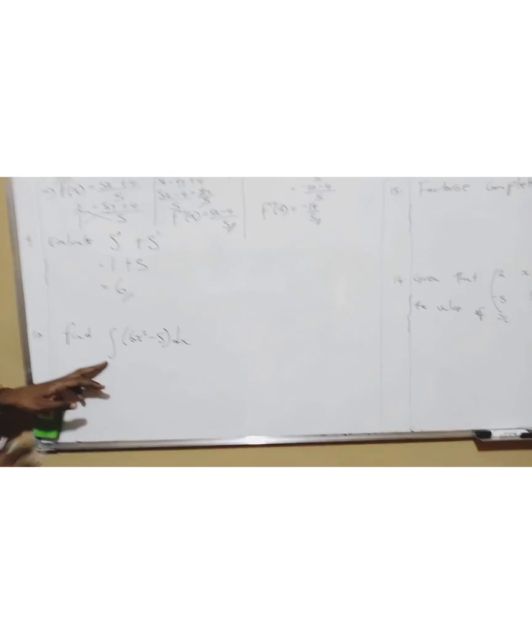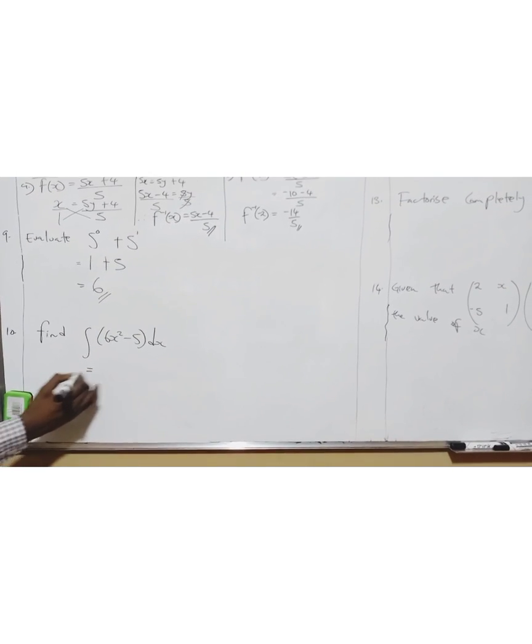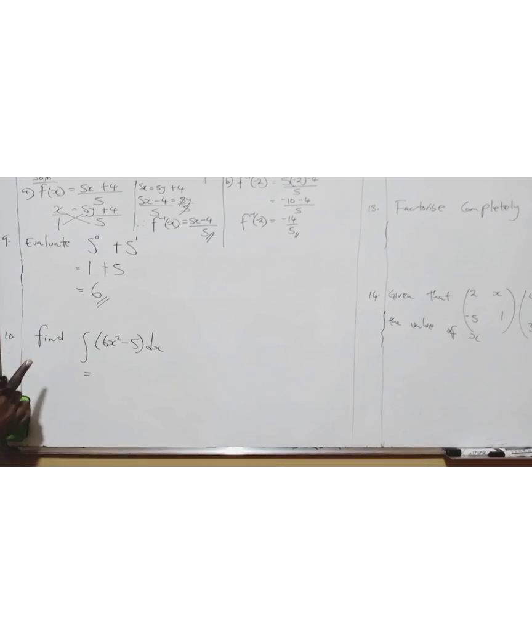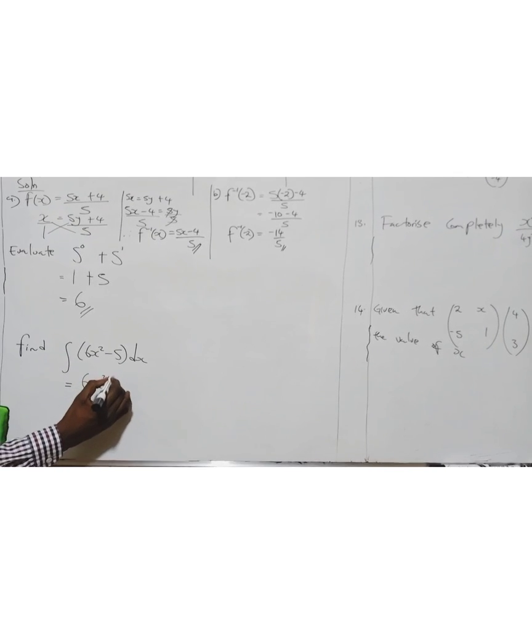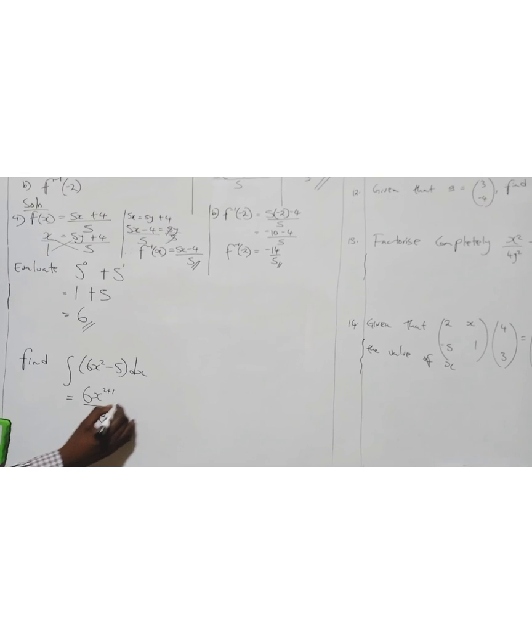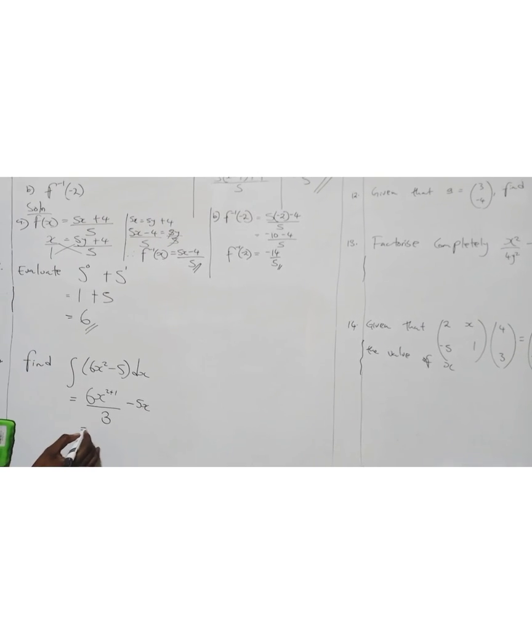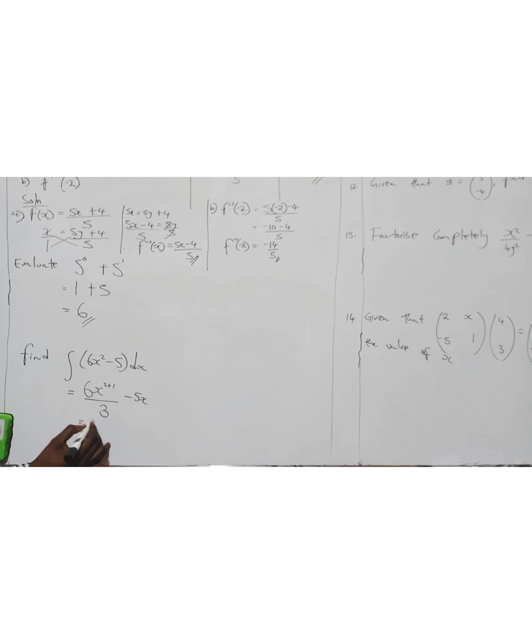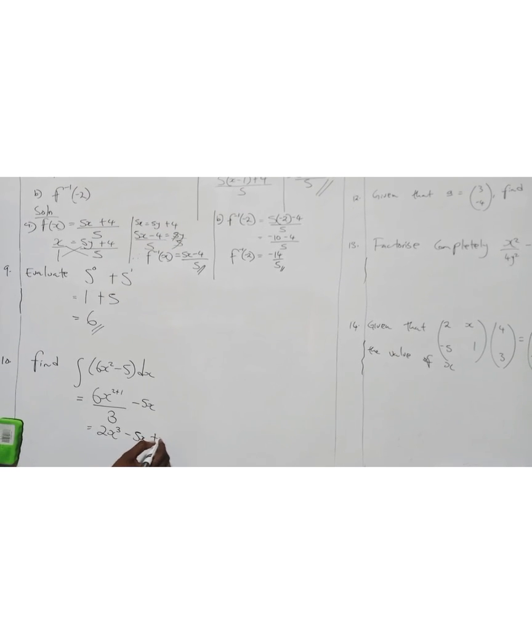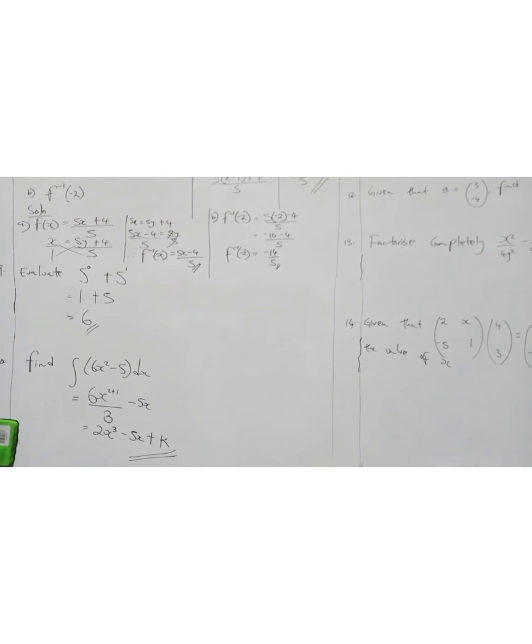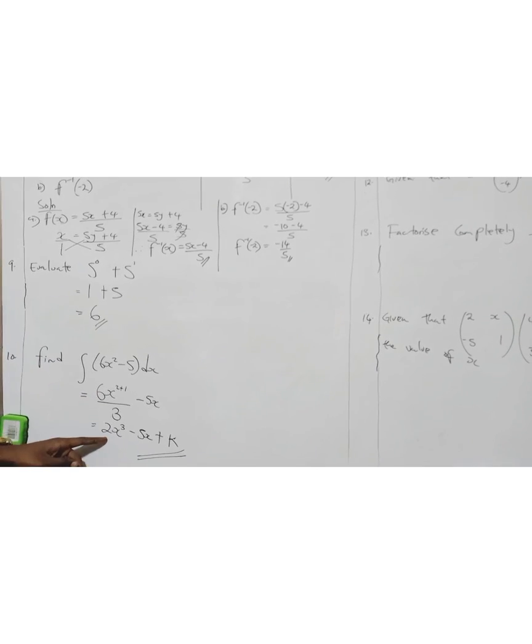Question ten: find integral of 6x squared minus 5 dx. Integration means you add plus one, and the answer that you find becomes your denominator. So 6x, 2 plus 1 is 3. The integral of a constant includes an x there. I have 3 into 6 is 2x to the power 3 minus 5x. Then you always include plus k or plus c.